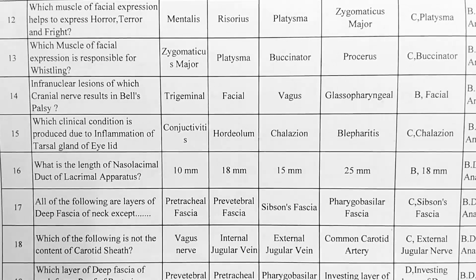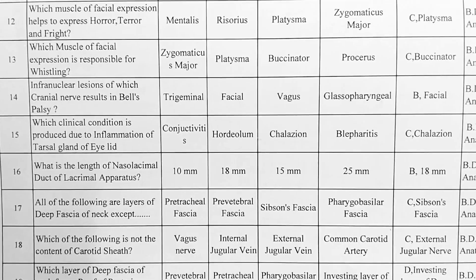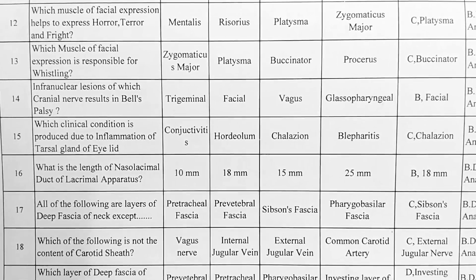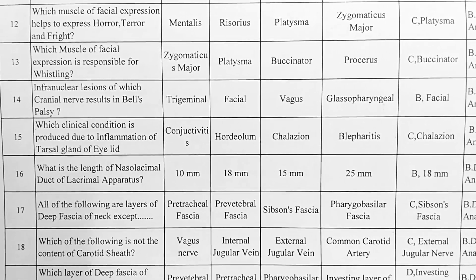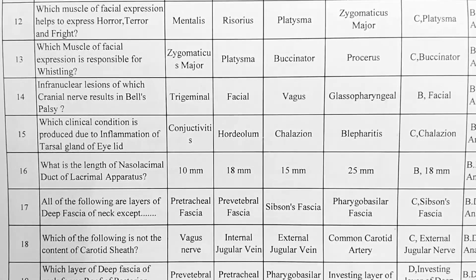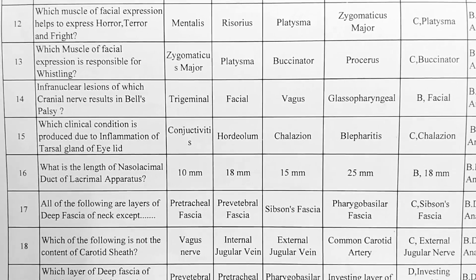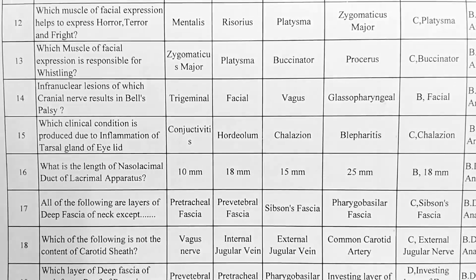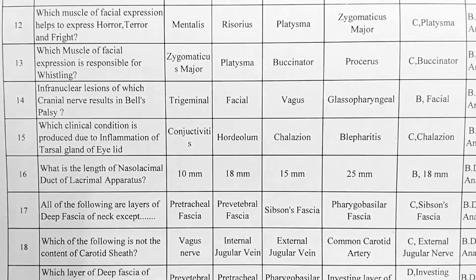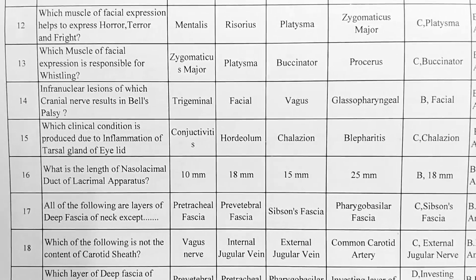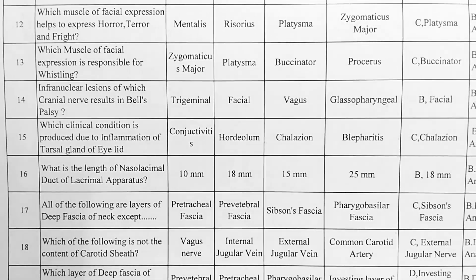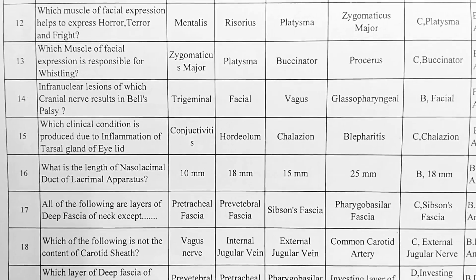Next. Infranuclear lesion of which cranial nerve results in Bell's palsy? Options — A: trigeminal nerve, B: facial nerve, C: vagus nerve, D: glossopharyngeal nerve. Option B is correct, facial nerve.